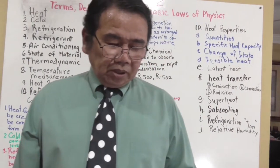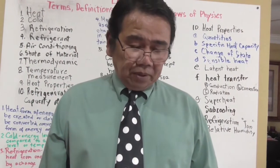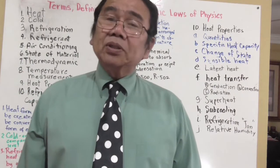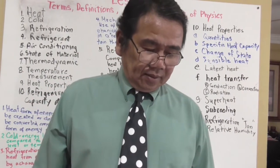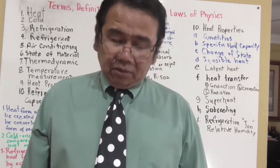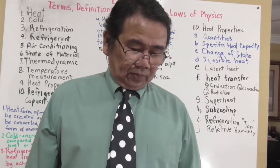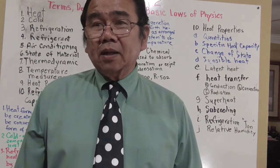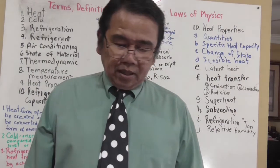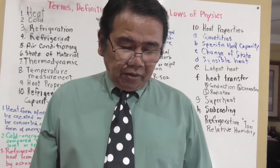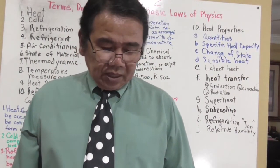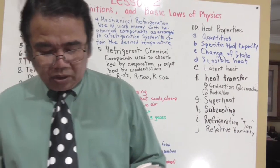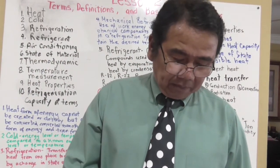Heat energy travels downward on the intensity scale — heat from a higher temperature material will travel to a lower temperature material. This process continues as long as the temperature difference exists. The greater the temperature difference, the greater the rate of heat travel. The difference in temperature between substances is commonly called delta temperature (ΔT).